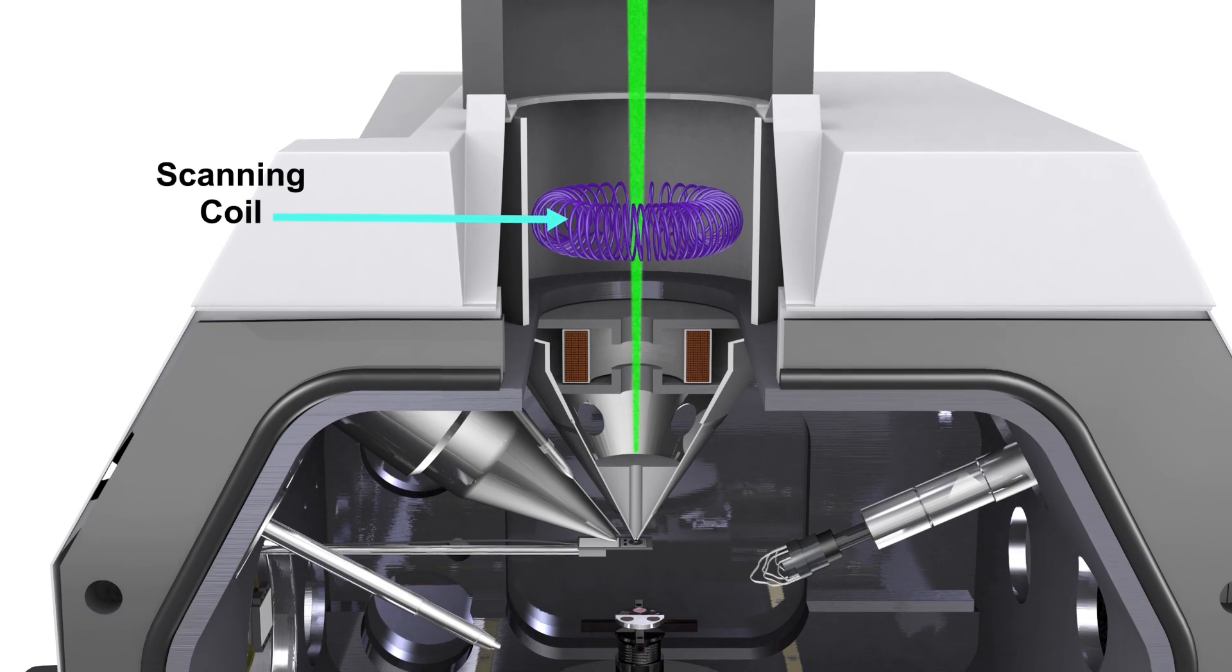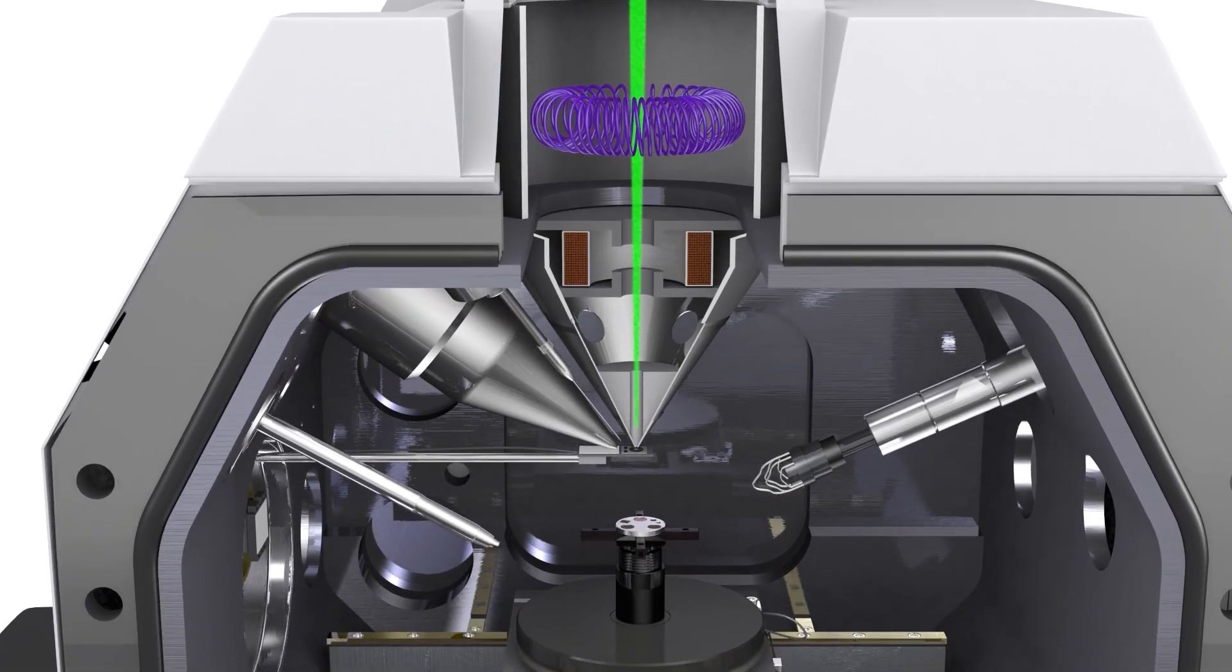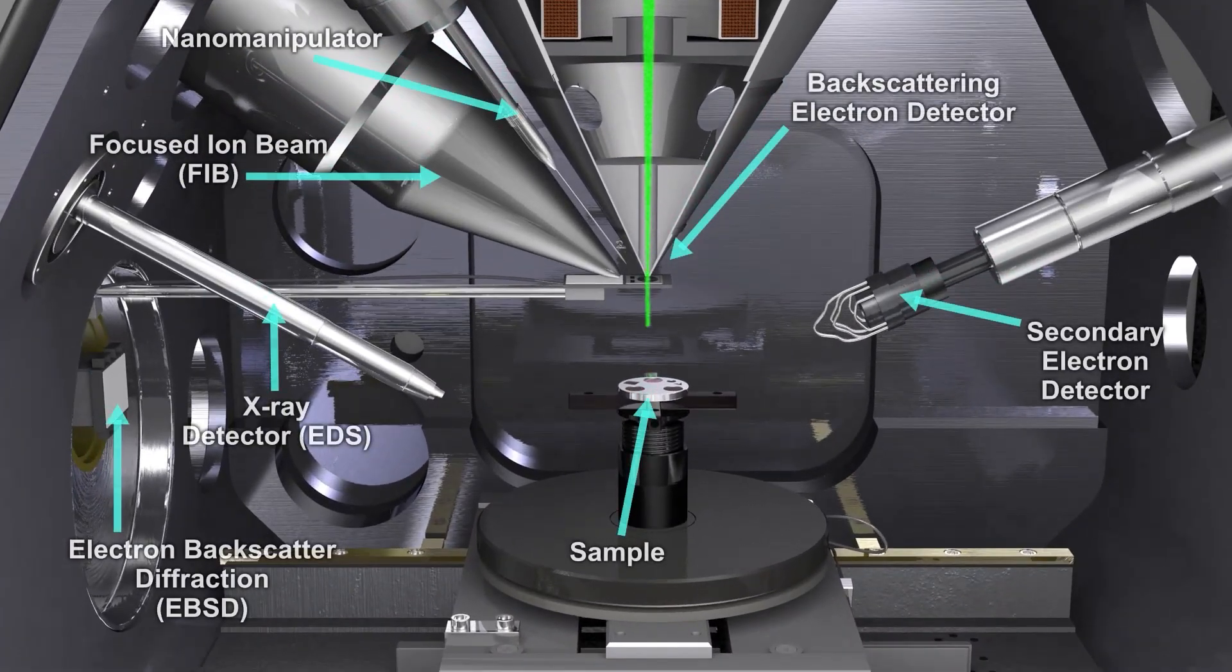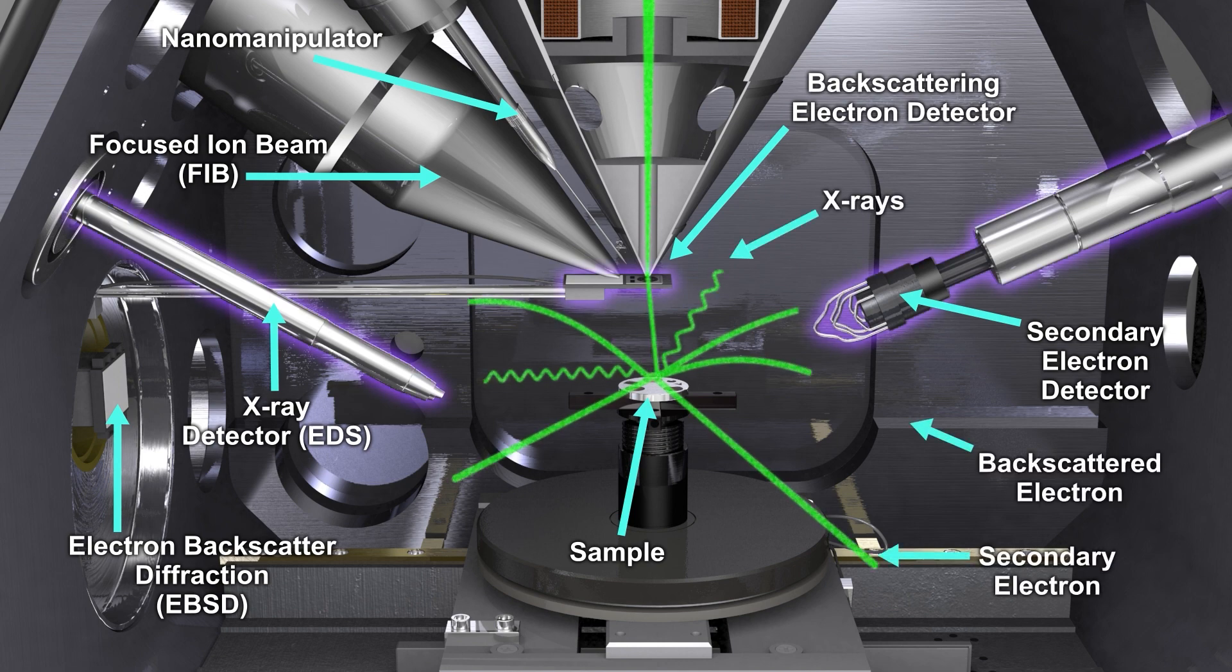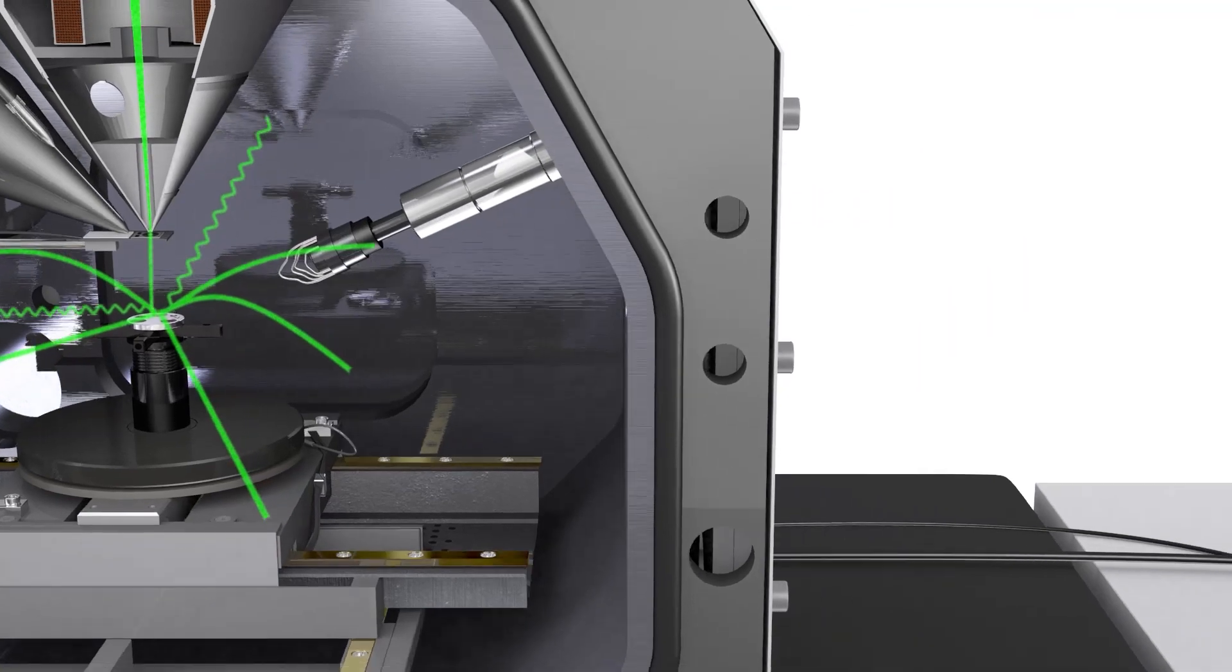Then the scanning coil directs the beam to scan in a particular pattern across the sample. As the beam hits the sample, electrons and X-rays scatter from the sample surface. Detectors collect these scattered electrons and X-rays, converting them into a signal and the signal into an image.